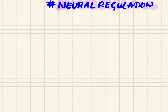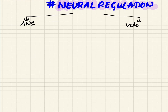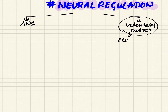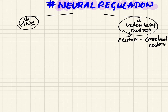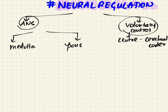Neural regulation happens by two methods: one is by the autonomic nervous system, and second by voluntary control. For voluntary control, the center is present in the cerebral cortex. For the autonomic nervous system, the centers are present in the medulla and pons — this is called the medullary pontine respiratory center.